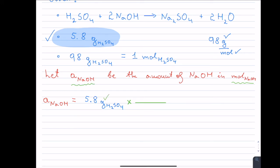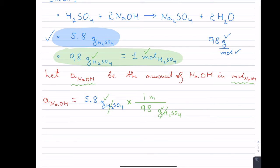Right now I have grams of H2SO4, and I want them to cancel. I go back to my givens and look for grams of H2SO4 — the only place I see that is in the molar mass given. So I place 98 grams of H2SO4 in the denominator so those grams cancel, and then I put the opposite — 1 mole of H2SO4 — on top. I always keep the units because they guide me along.